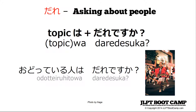'Wa' marks what you're asking about — the topic of the sentence. A more complicated example would be 'odoteru hito wa dare desu ka' — who is the person dancing? You can imagine you're at a party, looking at a big group of people, and you want to ask about a particular person without pointing at them directly.